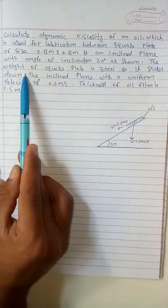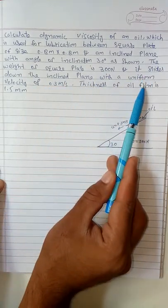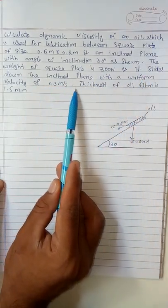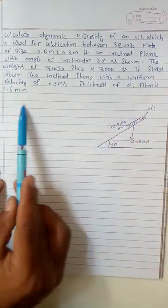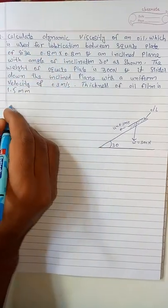As shown, the weight of the square pallet is 300 Newtons and it slides down the inclined plane with a uniform velocity of 0.3 meters per second. The thickness of the oil film is 1.5 millimeters.